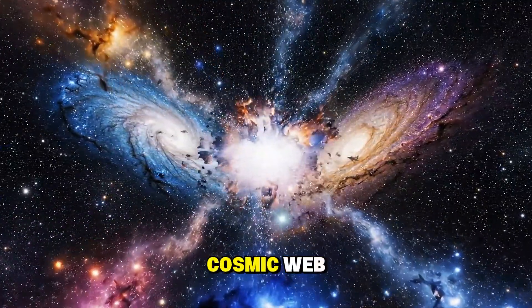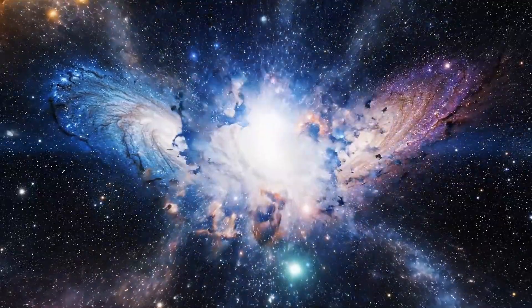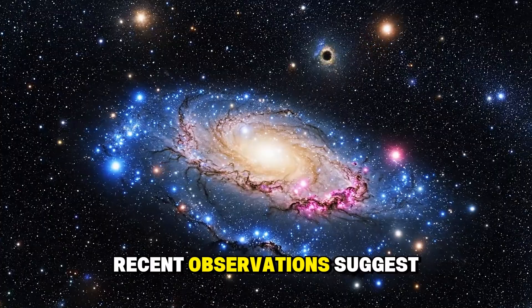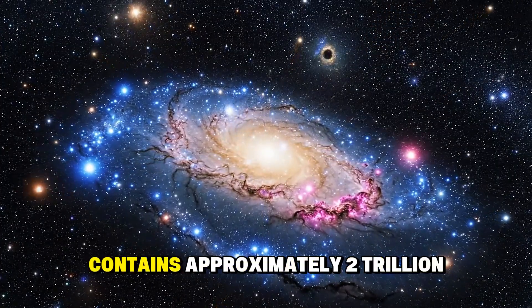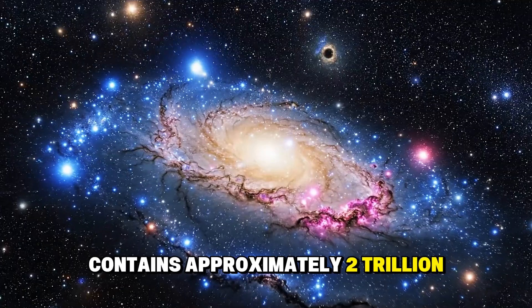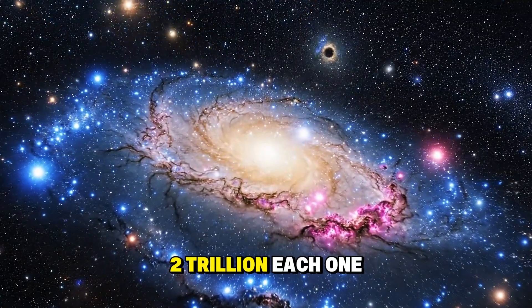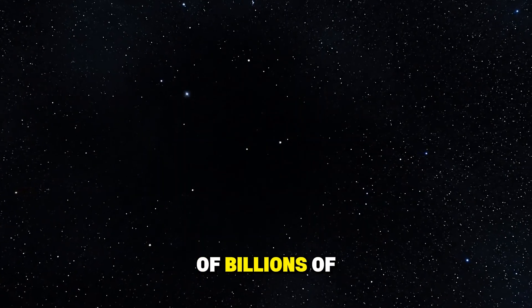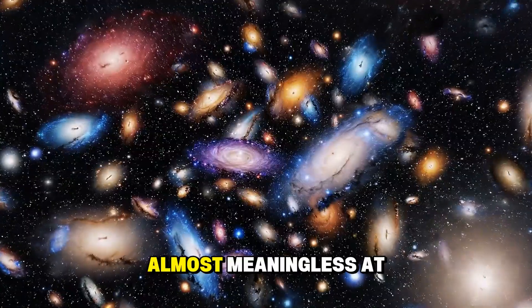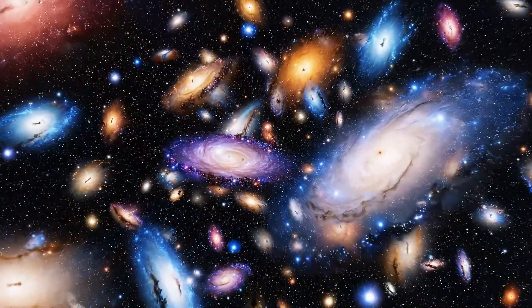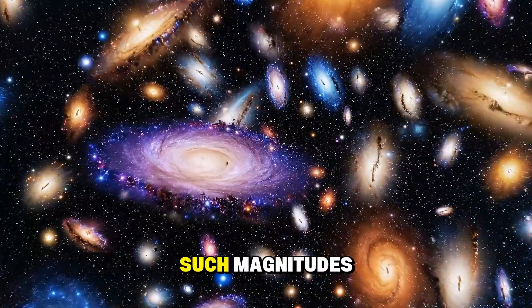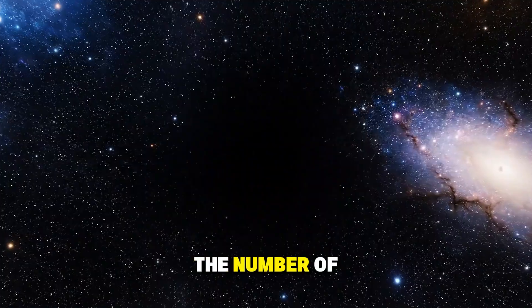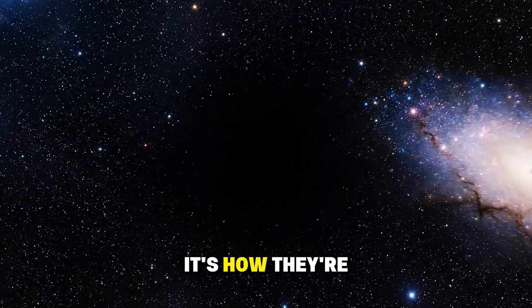Part 2: The Cosmic Web - The Architecture of Everything. Recent observations suggest our observable universe contains approximately 2 trillion galaxies, each one home to hundreds of billions of stars. The numbers become almost meaningless at this scale. Our minds weren't evolved to comprehend such magnitudes. But what's truly extraordinary isn't just the number of galaxies. It's how they're arranged.